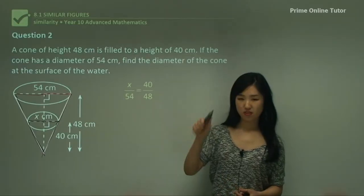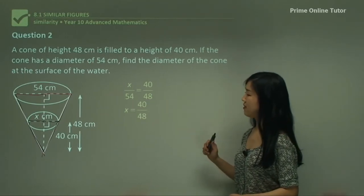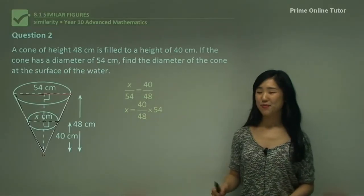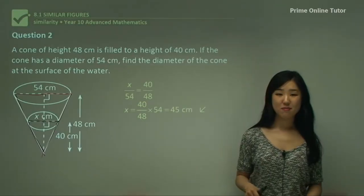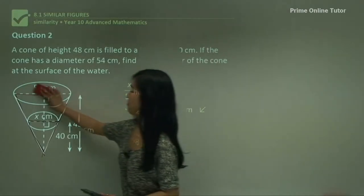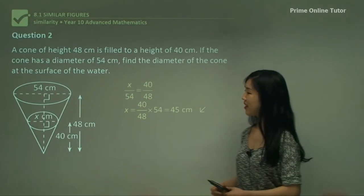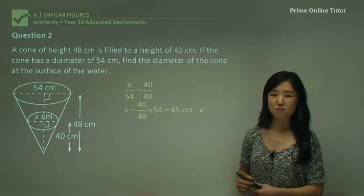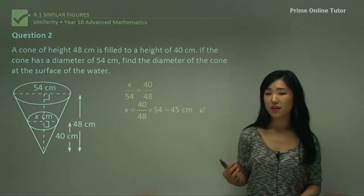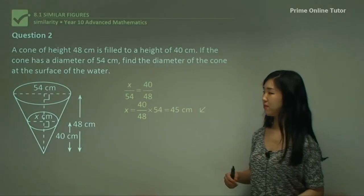You don't always have to use just the sides of the triangle. Now multiplying both sides by 54, you should get 45 centimetres — that's the value of our diameter x. It was very similar to the previous question. Sometimes the question might not give you the diagram, so make sure you examine the content carefully and transfer that information to a diagram first. I always recommend you draw diagrams.